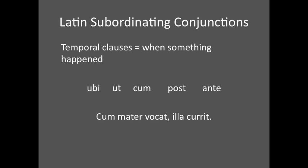There are also subordinating conjunctions that set up different types of subordinate clauses. Temporal subordinate clauses say when something happened. They are introduced by ubi, ut, cum, post, and ante. For example, cum mater vocat, illa currit — 'When her mother calls, the girl runs.' The word cum signals that the 'cum mater vocat' clause is subordinate. We know it ends with the verb because of Latin's subject-object-verb word order, and because of the comma.